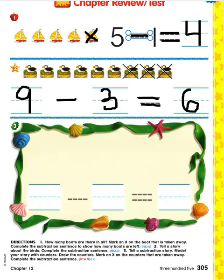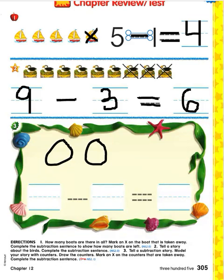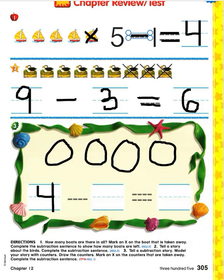Number three. I'm going to tell you a subtraction story. I want you to draw a picture to match and write a subtraction sentence to match the picture. I'll do this one with you. There were four balls in the ball cart. One, two, three, four. I'll draw four balls on the work map and write a number four on the first handwriting line to show how many were in our group to start.